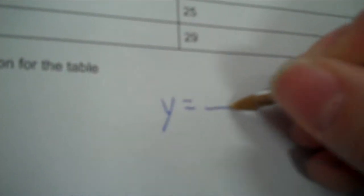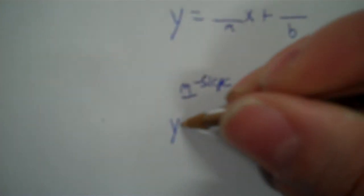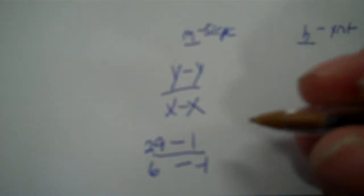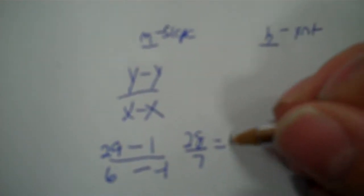So y equals m times x plus b. I have to find the m and the b. M is the slope and b is the y-intercept. The slope is the rate of change of the function. It's what the y is changed by over what the x is changed by. That is why it is expressed as y minus y over x minus x. So I pick any points on the table. I'll go with these two. So I will start with my higher x value, 6, and put 29 over it. And then my lower, negative 1, and put 1 over it. So that is 28. 6 minus negative 1 is 7, because it's the same as 6 plus 1. Divide that, we get 4.